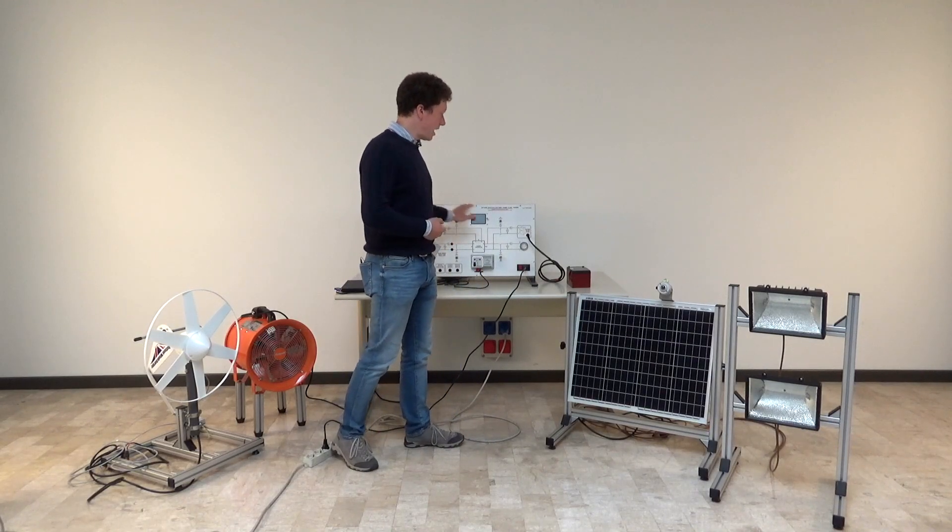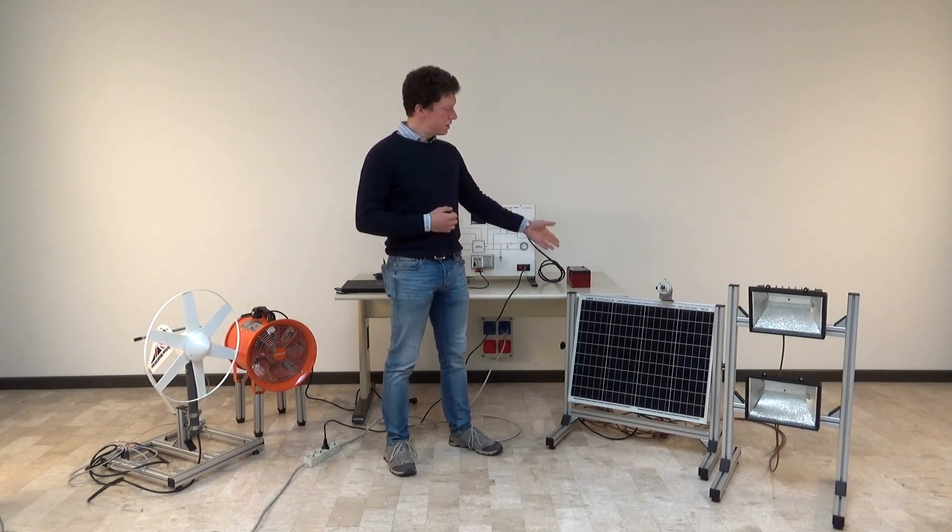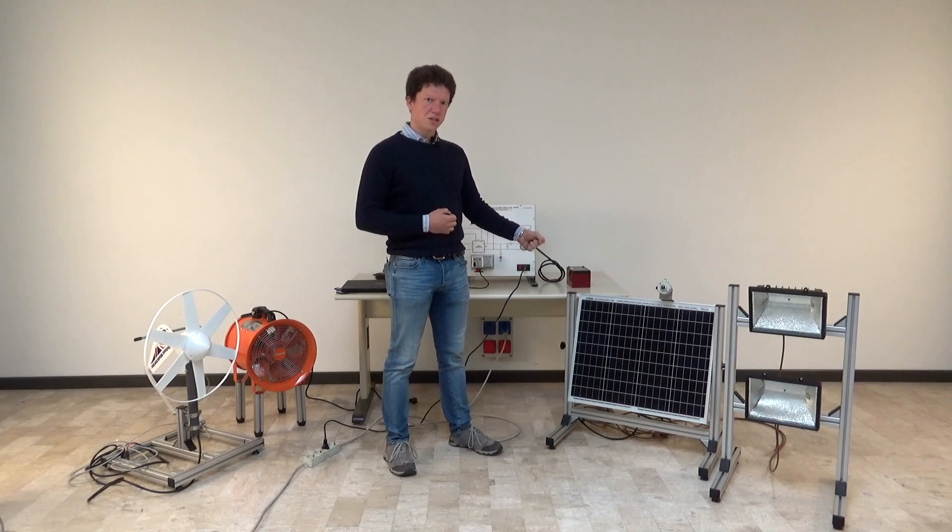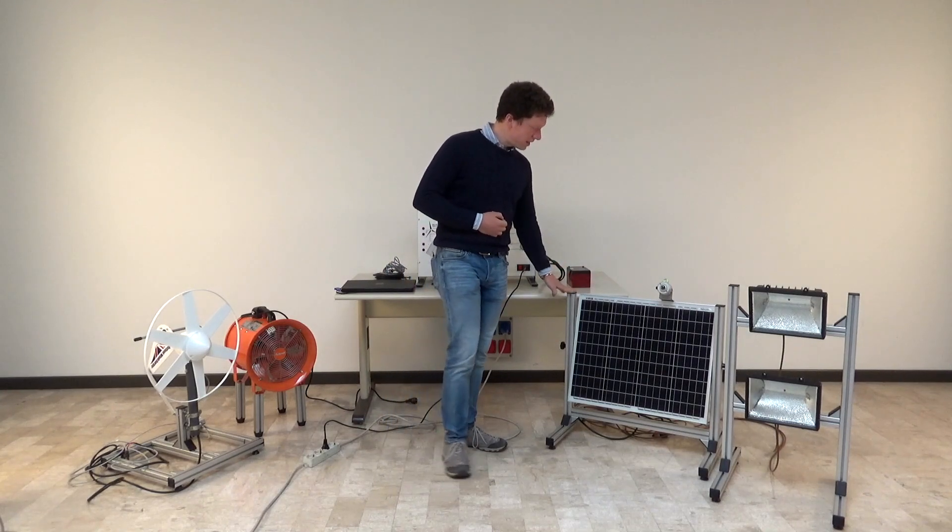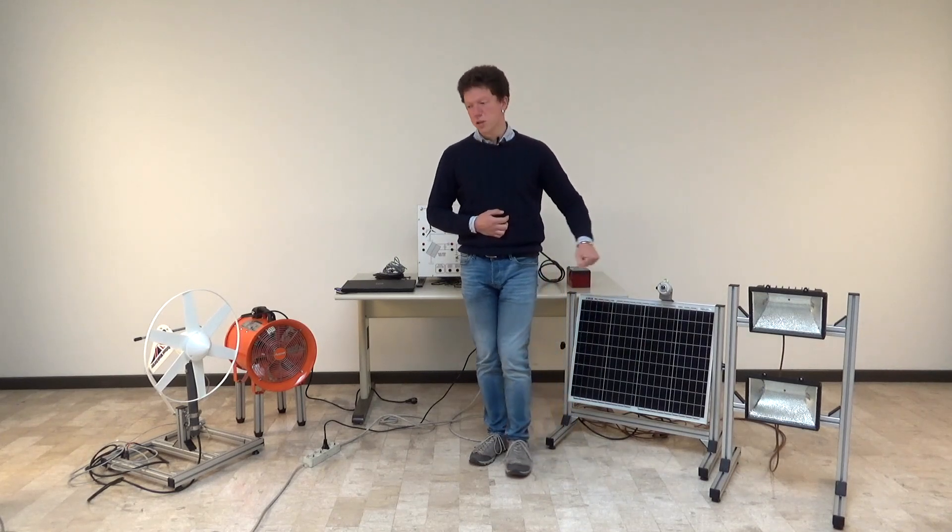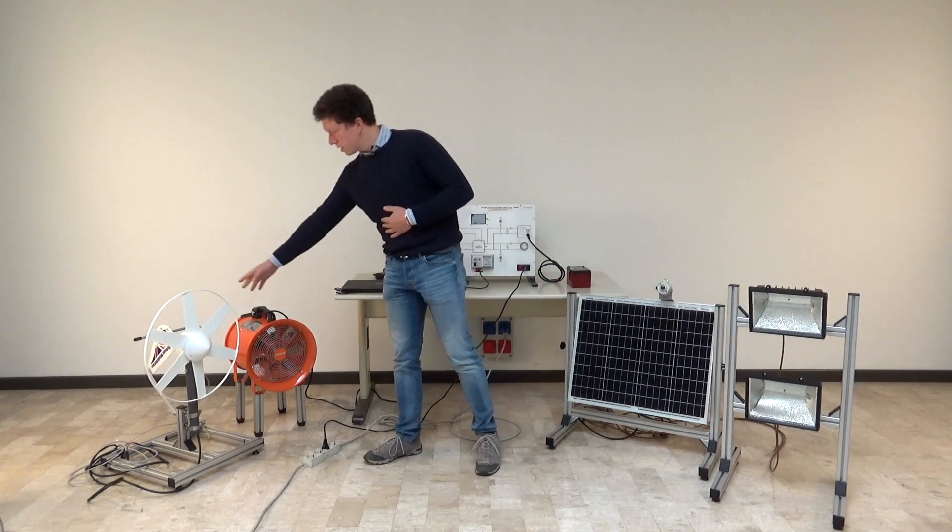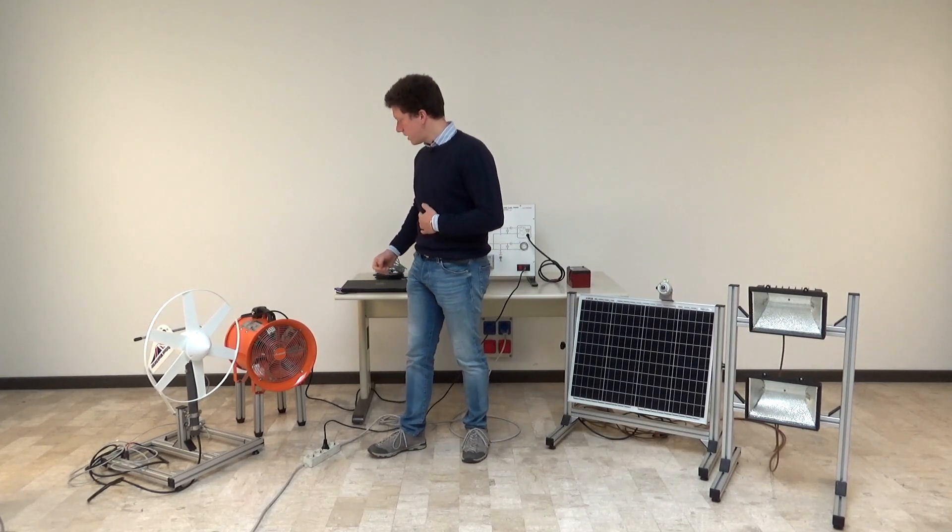The trainer is composed of a main unit and a buffer battery. For the photovoltaic panel system, we have a photo panel itself and a simulation of solar light via two lamps. For the wind generation part, we have a wind generator itself and the wind turbine to simulate the wind speed.